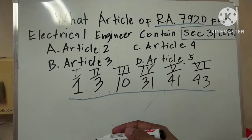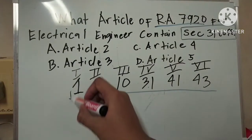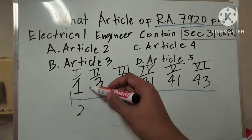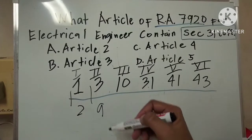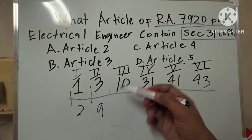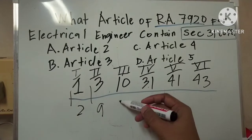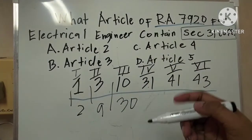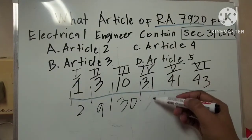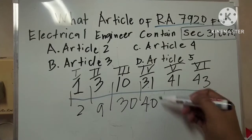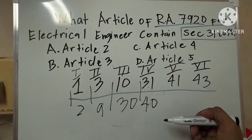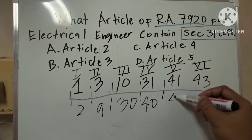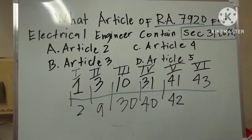Itong Article 1, ibig sabihin nito, 1 hanggang 2. And then yung Article 2 naman, 3 hanggang 9. And then yung Article 3, 10 hanggang 30. And then yung Article 4 naman is 31 hanggang 40. And then yung Article 5 is 41 hanggang 42. So yun lang guys.